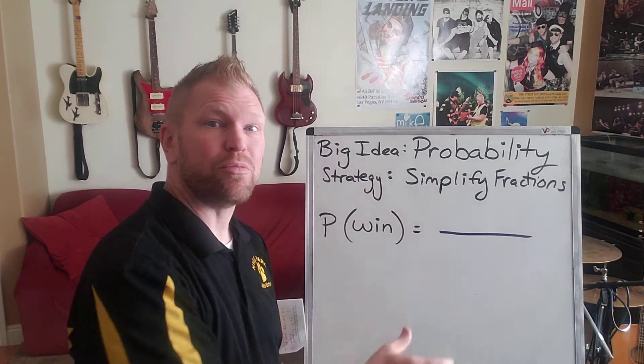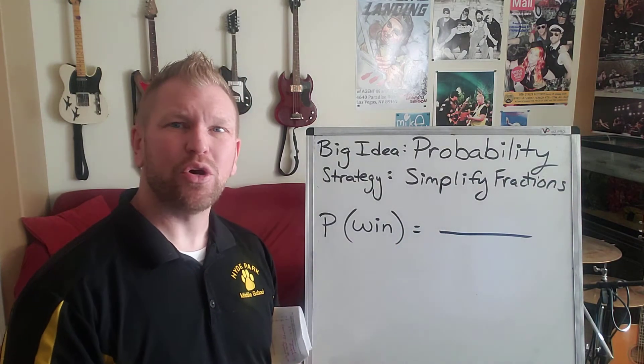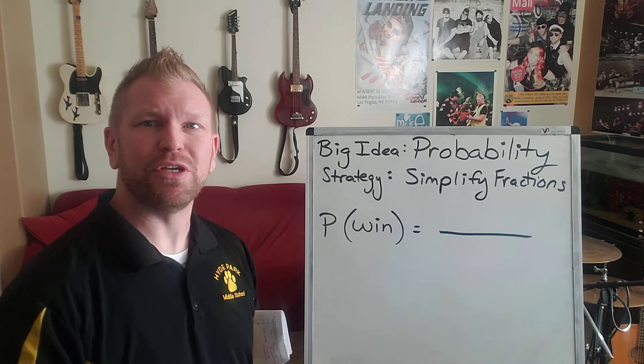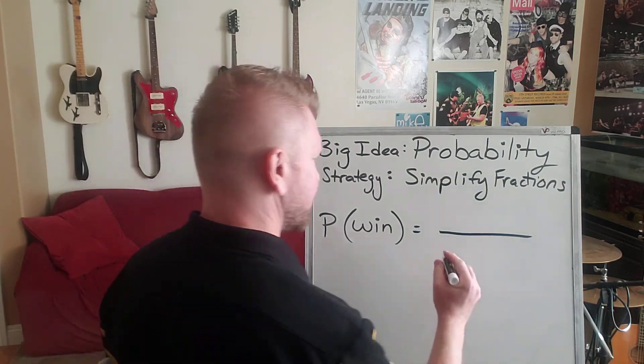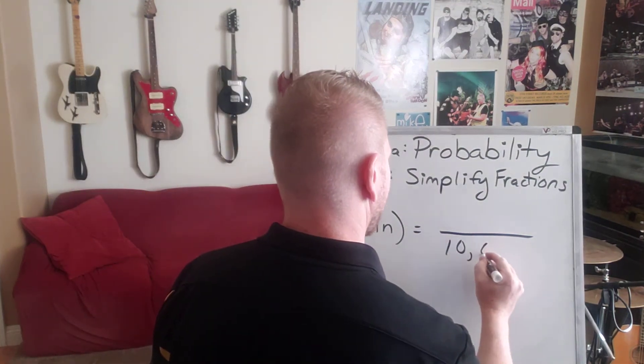Remember, the denominator is the total number of outcomes. In this case, how many total tickets have a possibility of being drawn? And the answer is 10,000 total tickets.